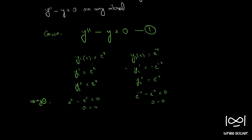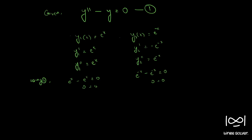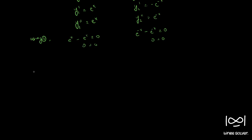Now we have to see whether these two are independent solutions. We can use the Wronskian to check. If the Wronskian is not equal to 0, we can say that these solutions are linearly independent.